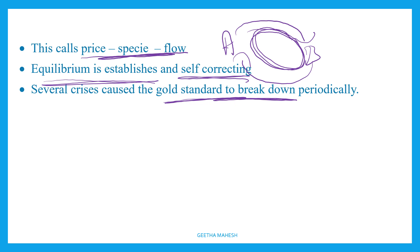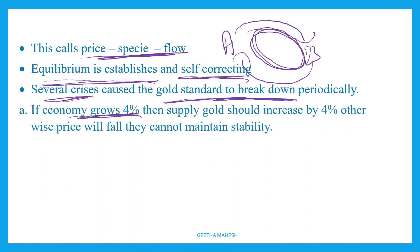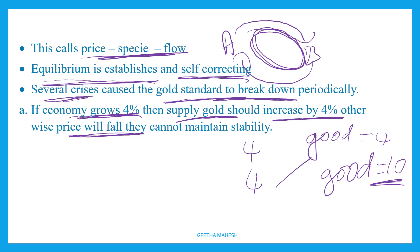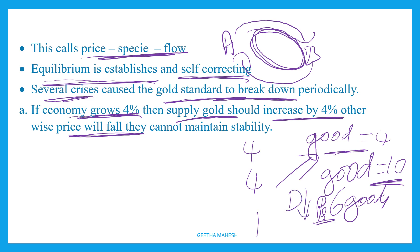However, gold standard eventually broke down and collapsed over a period of time. There are several causes. Economic growth increases at around 4%, but supply of gold also increases at only 4%. If I can only buy goods worth 4 rupees, the remaining 6 rupees worth of goods sees low demand.